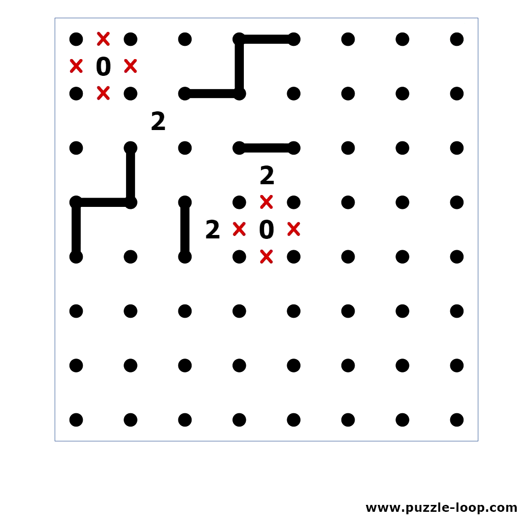Unique solution technique. All quality Slitherlink puzzles have only one solution. We can use this fact in our favor. In this example, if we solve the 2s like this, then the other 2 can be solved in 2 valid ways. This would mean that the puzzle has more than one solution, so we can rule it out. We can solve the example like this.